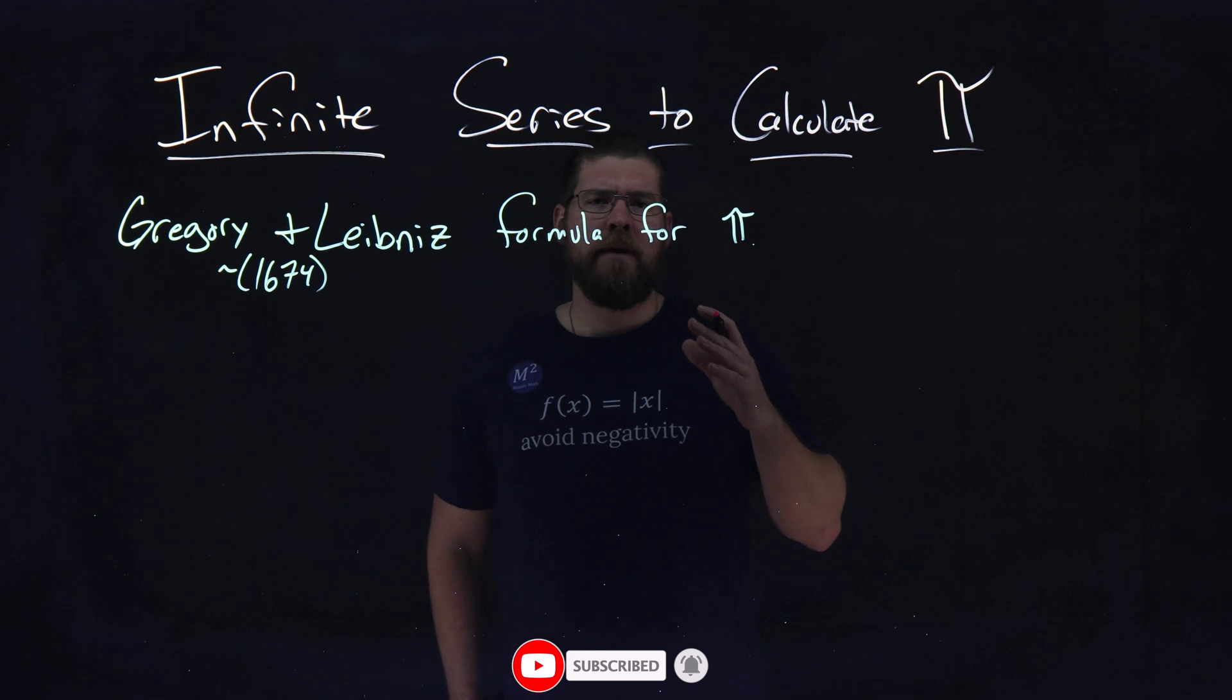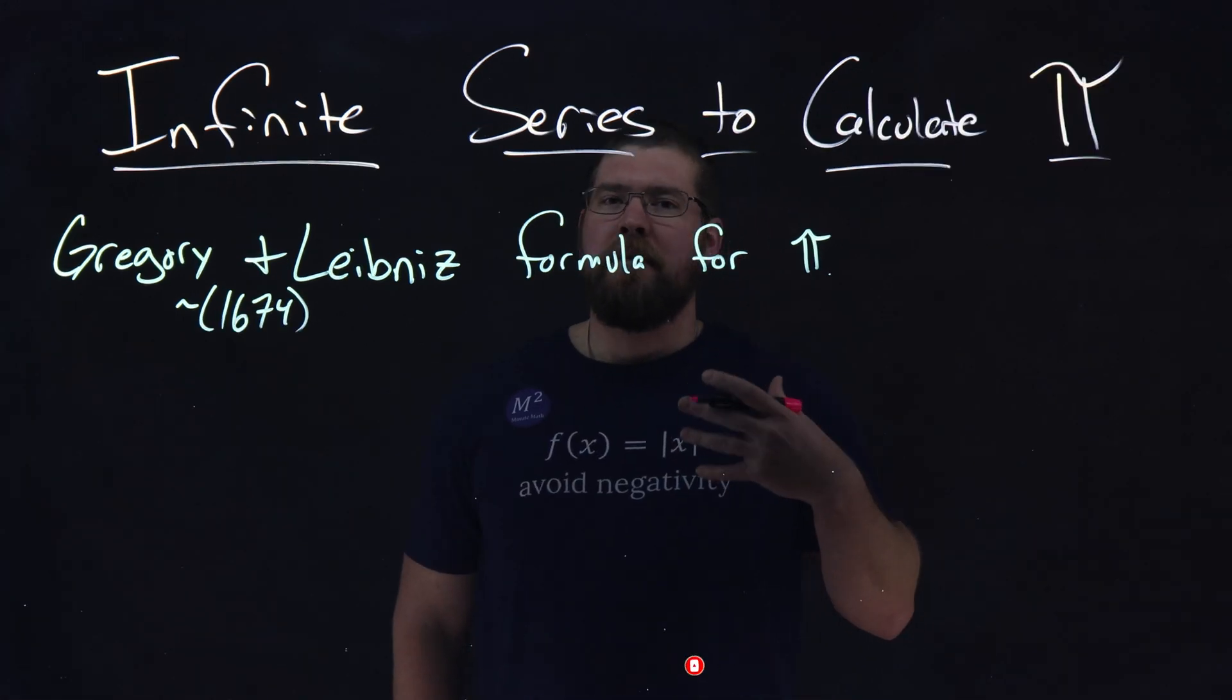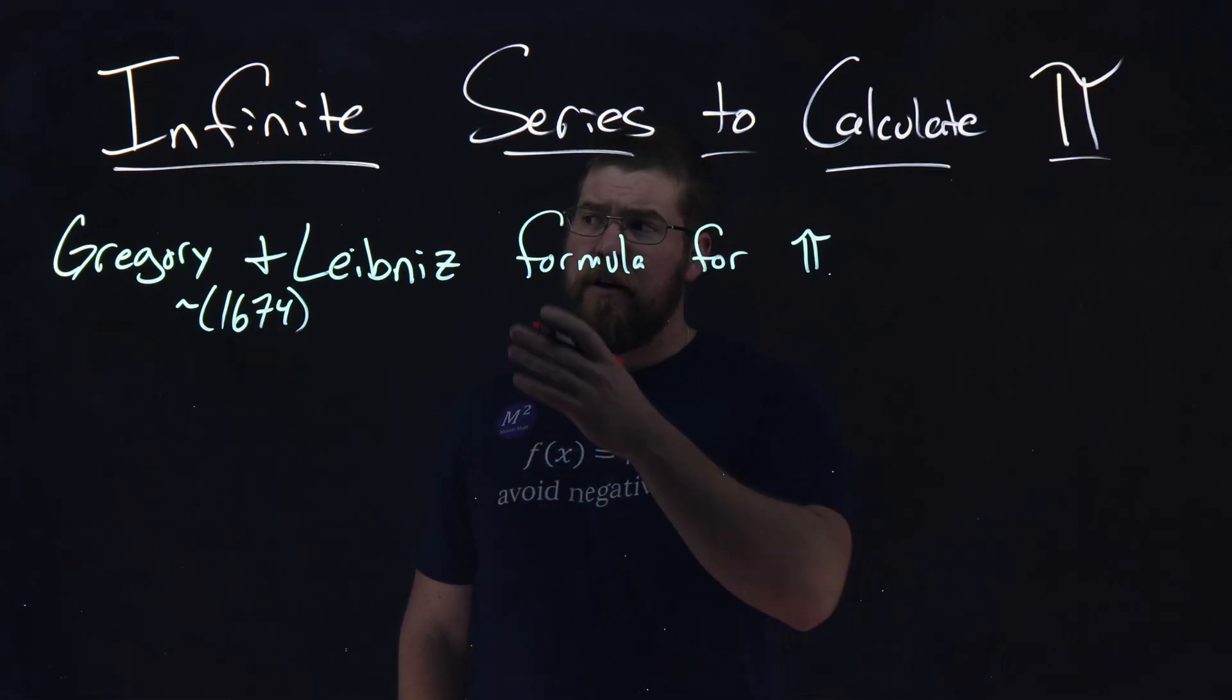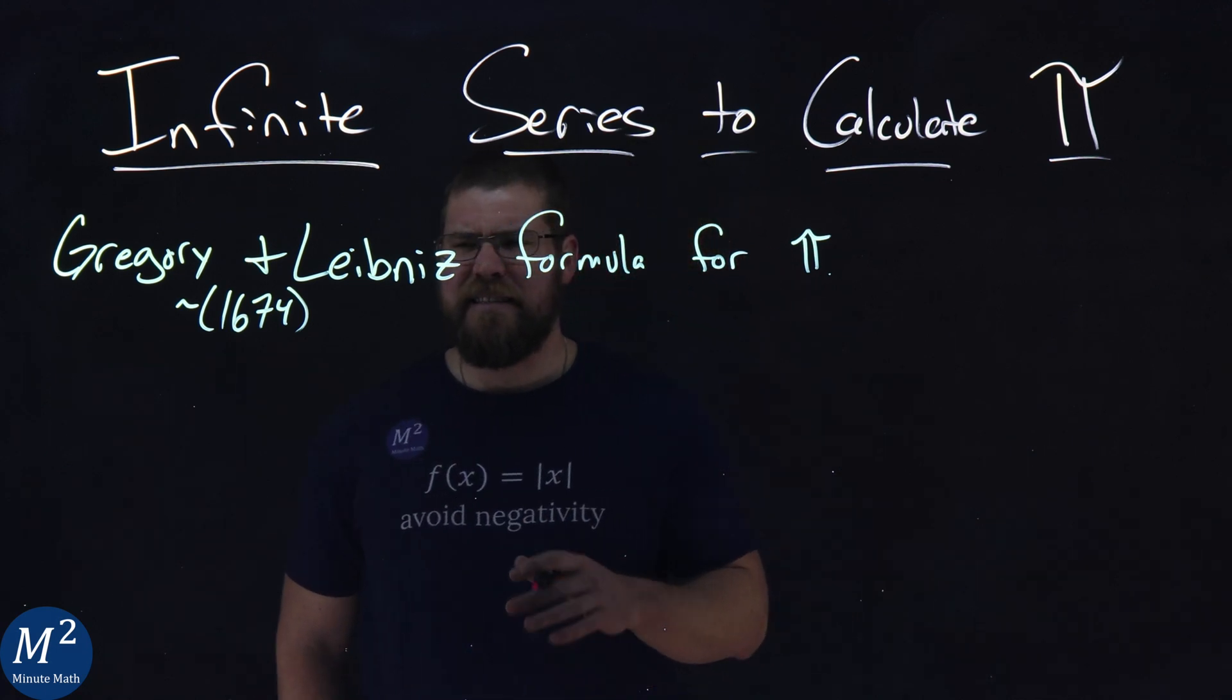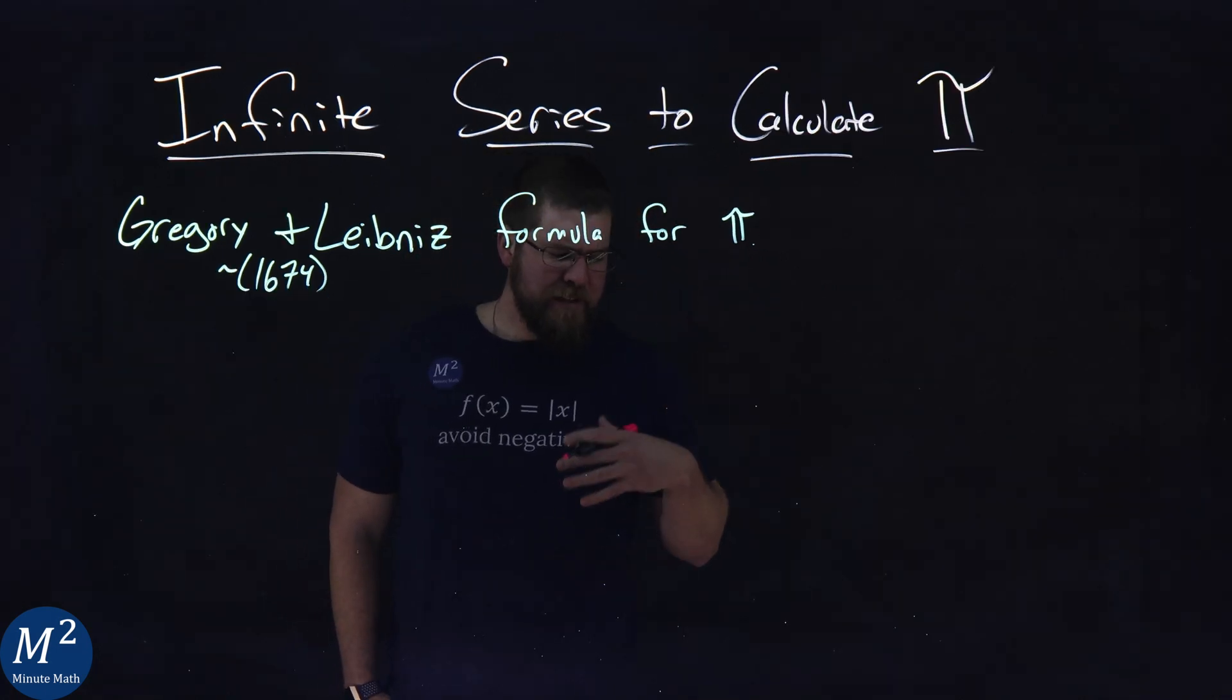And this is one of the series here that really got me to see the beauty of mathematics. This is the Gregory and Leibniz's formula for pi from about 1674. And the formula is kind of this.